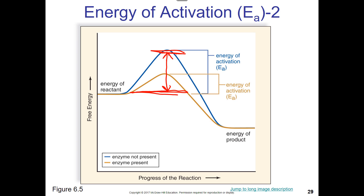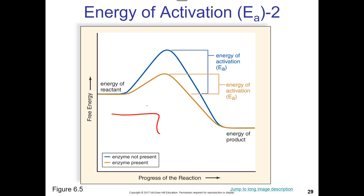Consider sugar in your cupboard — it's stable even though it has free energy and you can burn it. Why? Because it takes a lot of activation energy to break it down; you'd have to light it on fire. What enzymes do is put things into positions where just a tiny little bit of energy can set off the reaction. Enzymes lower the energy of activation — they bring it down.